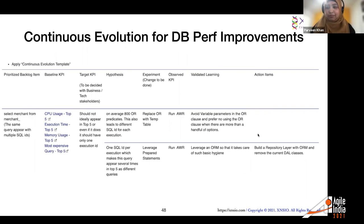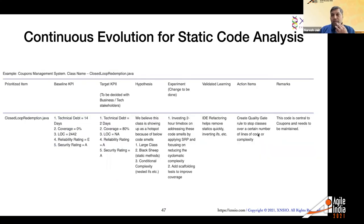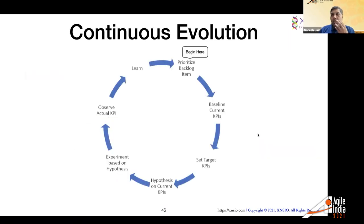Ten minutes to go. I've actually pretty much wrapped up — two slides to go, so I'll leave 10 minutes for Q&A. Just to reiterate the Continuous Evolution approach: prioritize the backlog item — which we've discussed — establish a baseline KPI from the tools, set a target KPI, define a hypothesis of what's causing the problem and what could address it.